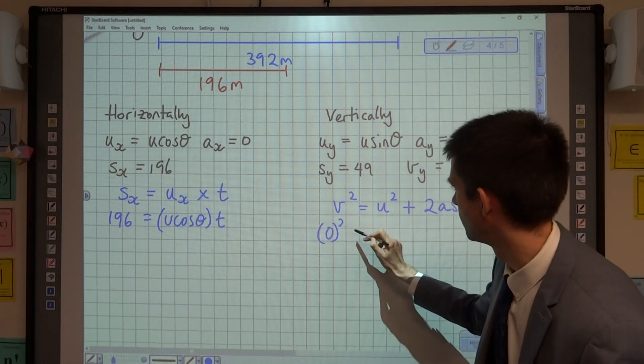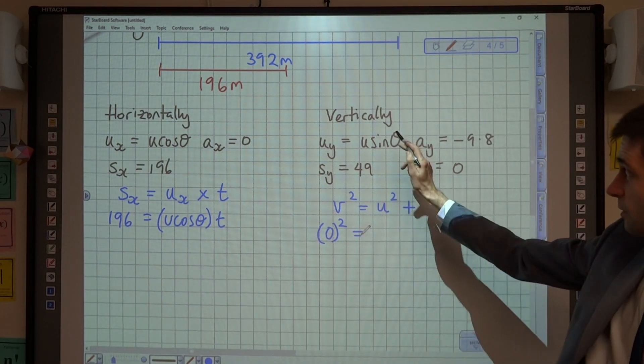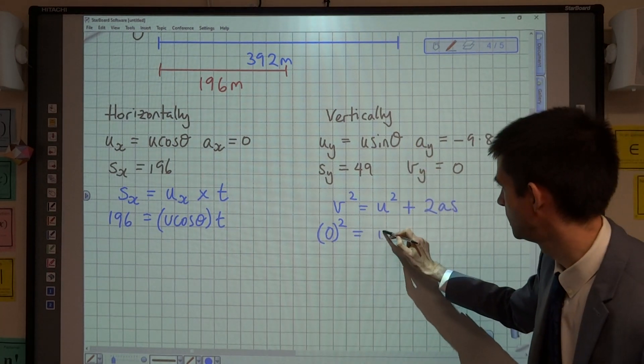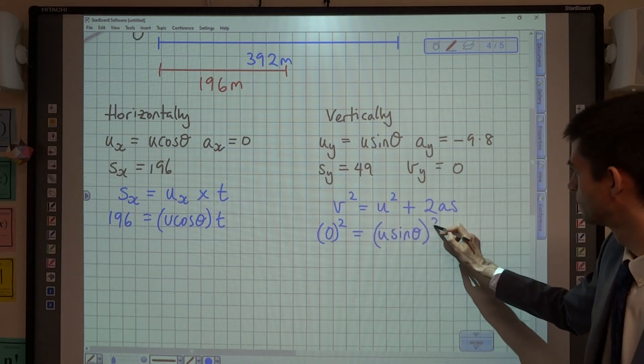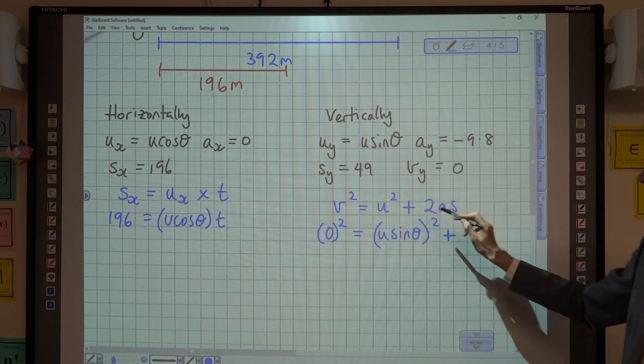We know that v is zero. We know that u in the vertical direction is u sin theta, so it's going to be u sin theta squared. Plus 2as, so 2 lots of negative 9.8 multiplied by 49.